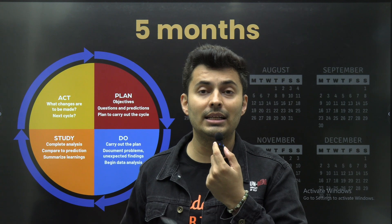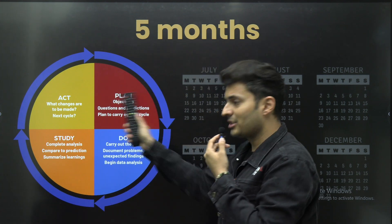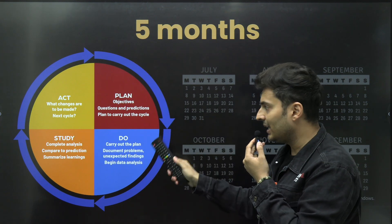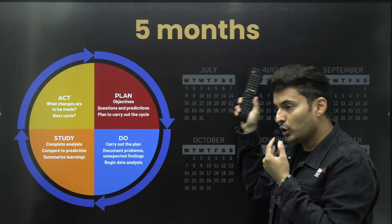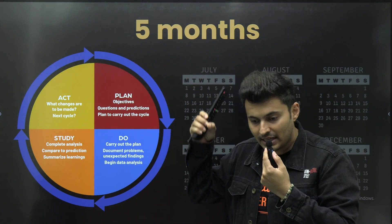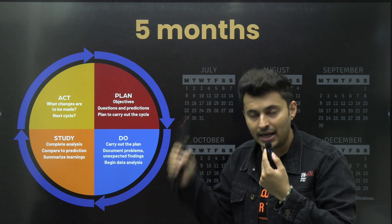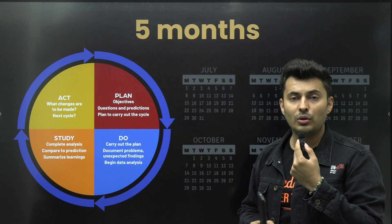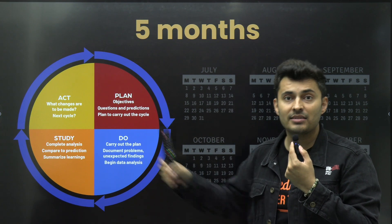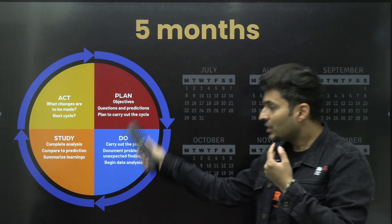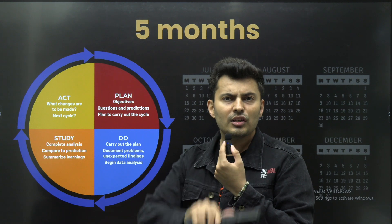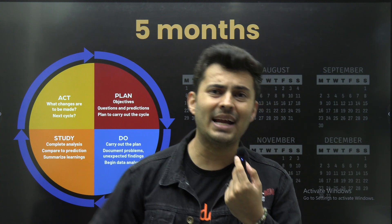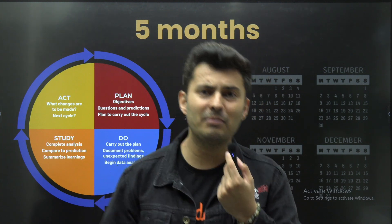The most important cycle is: you need to act, you need to plan, and you need to do it — literally sit and watch videos, write theory notes, or practice problems. You need to study, there is no alternative. Otherwise you will just keep planning and planning and planning.